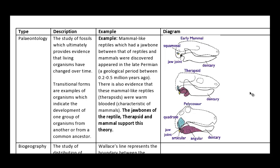As this dot point asks for specific examples, what I'm really going to be focusing on is the example itself. In paleontology the example I used was mammal-like reptiles which had a jaw bone between that of reptiles and mammals which were discovered in the late Permian which is a geological period between 0.2 to 0.5 million years ago. There is evidence that these mammal-like reptiles such as these therapsids were warm-blooded which is also characteristic of mammals and the jaw bones of the therapsids and mammals support this theory. I have a little diagram here just to illustrate what I'm trying to say if my text was a little garbled.